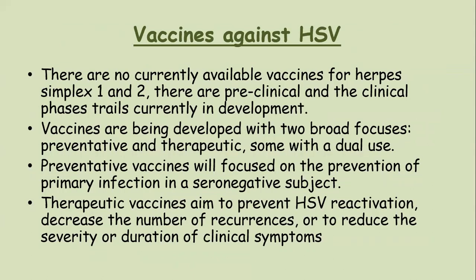Vaccine against herpes simplex virus: there is currently no available vaccine for HSV-1 and HSV-2; pre-clinical and clinical phase trials are currently in development. Vaccines are being developed with two broad focuses — preventive and therapeutic, some with dual use. Preventive vaccines focus on prevention of primary infection in seronegative subjects, while therapeutic vaccines aim to prevent HSV reactivation, decrease the number of recurrences, or reduce the severity and duration of clinical symptoms.